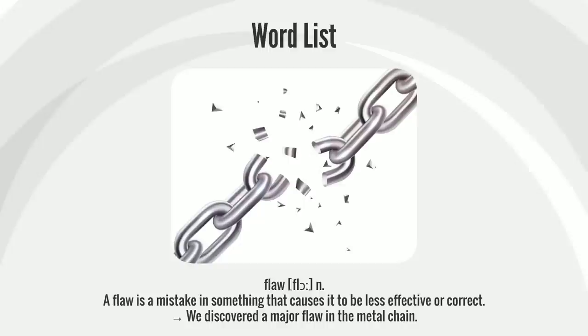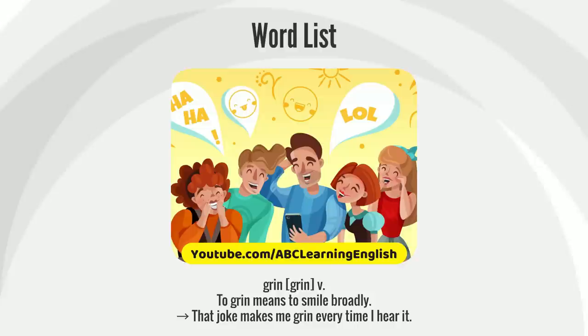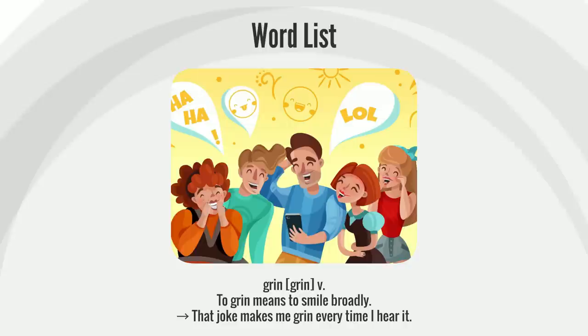A flaw is a mistake in something that causes it to be less effective or correct. We discovered a major flaw in the metal chain.